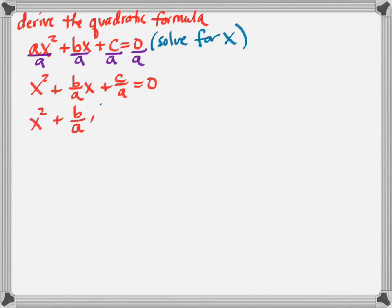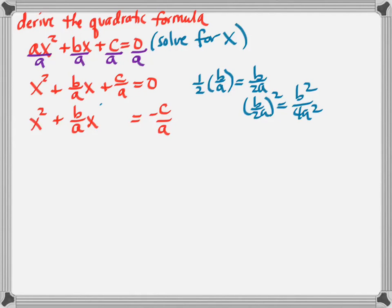The next step, I'm going to move the c/a term to the other side and make room to complete this square. So now off to the side, I'm going to do the process for completing the square. I take half of the middle coefficient b/a, which gives me b/2a, and then I square that to get b²/4a². That is the number or expression that will complete this square.